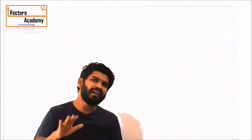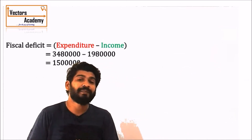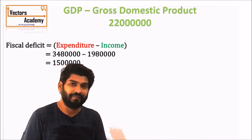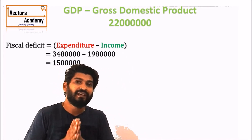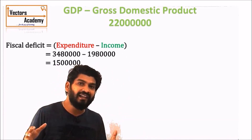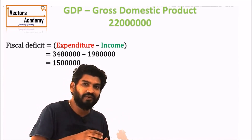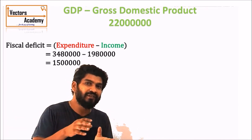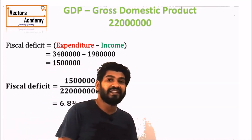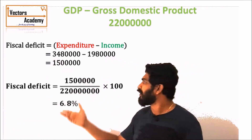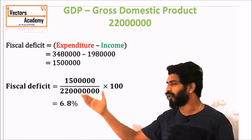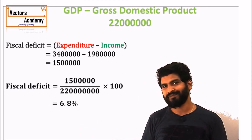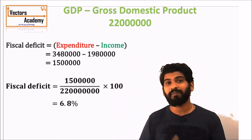These different types of deficits are not always expressed in absolute figures — they are expressed as a percentage of GDP, the gross domestic product. GDP is the sum of the values of all goods and services produced inside the country. Calculating the fiscal deficit as a percentage of GDP gives 6.8% for India. We will learn more about GDP in the coming session.